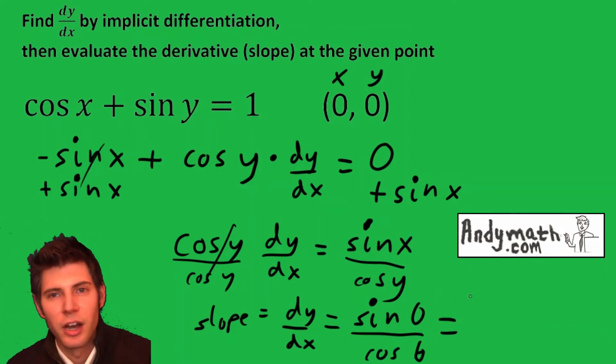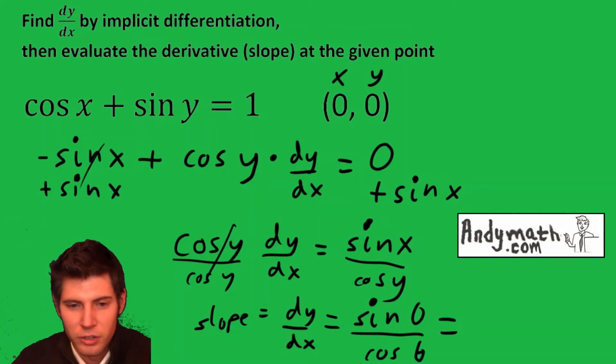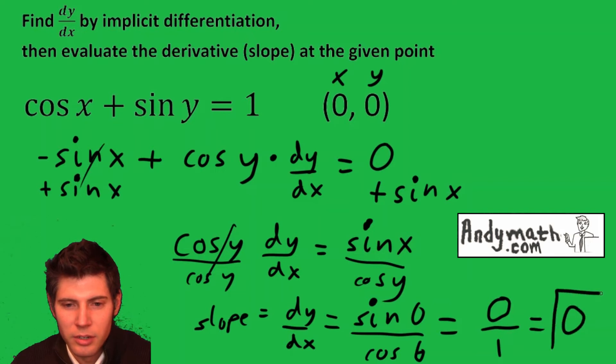So sine of 0, if you either use your calculator or think of the unit circle, is 0, and cosine of 0 is 1. And 0 over 1 is 0. So the answer to the question is 0.